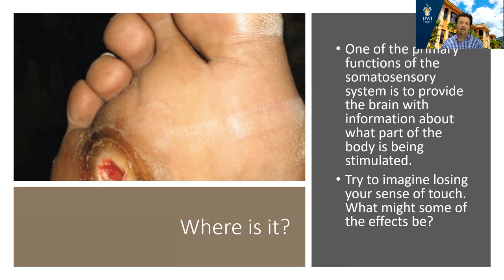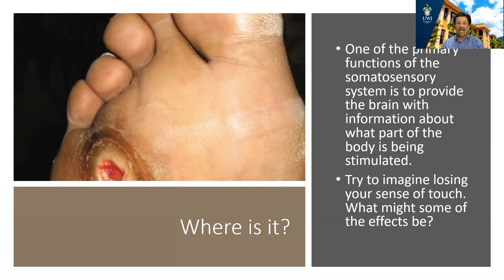Let's move on to our next question: where is it? One of the primary functions of the somatosensory system is to tell the brain what part of the body is being stimulated. If you don't know what part of your body is being stimulated, you can have a lot of problems. For example, this image shows a foot ulcer in somebody who has diabetes. Because of peripheral neuropathy, their nerves in their feet are no longer working. If they get a little cut on the foot, they don't feel the pain, don't take care of the cut, and an ulcer can develop — possibly infected and gangrenous. This is often what happens in diabetes when persons have an amputation.